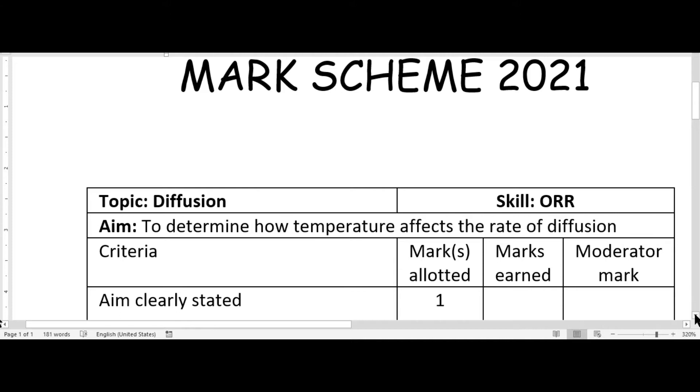The mark scheme is pretty much a rubric that shows how the marks will be allotted for each item that you will look at or cover in the lab. So usually it begins with the topic and we are looking at diffusion and the particular skill to be assessed is of course observation reporting and recording or recording and reporting.